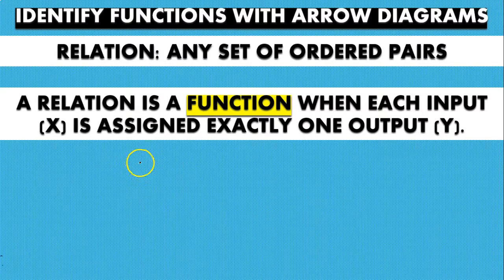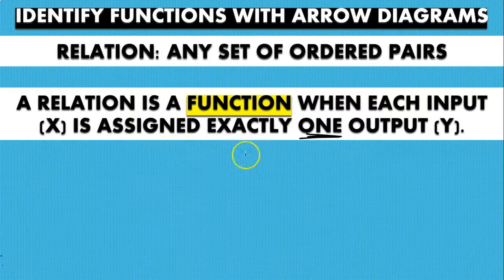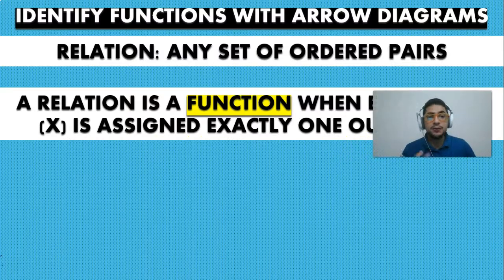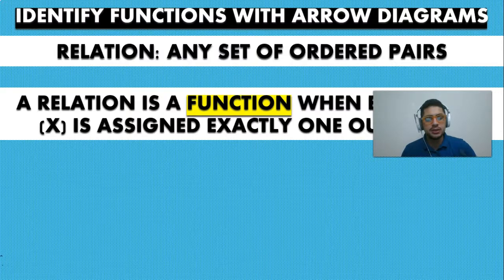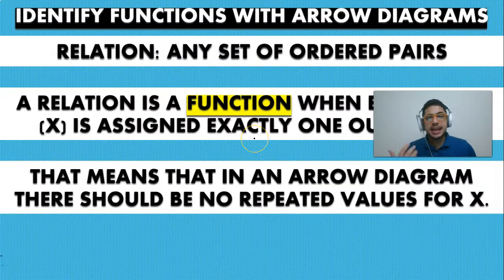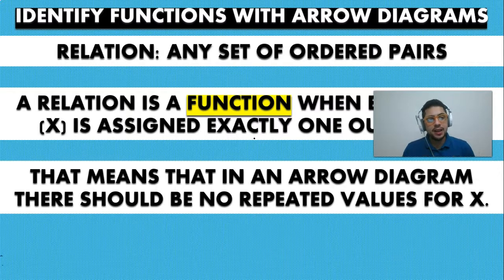The definition says that a relation is a function when each input or value of X is assigned exactly one output. That means we can only have one specific value of Y for each and every X. If we have two values of Y for one value of X, then we are not talking about a function. In an arrow diagram, there should be no repeated values for X.